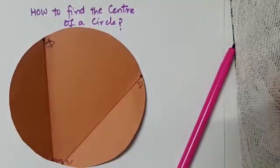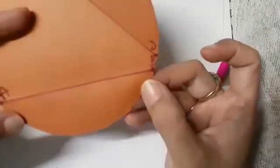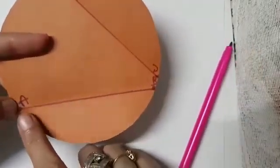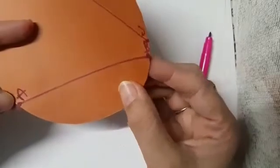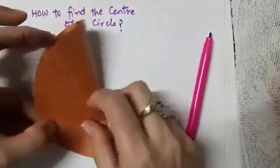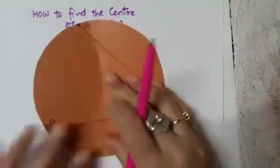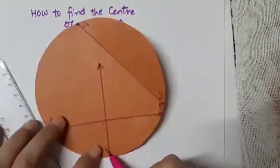I hope you watched the previous video in which we did some basic paper folding activities and learned how to find the perpendicular bisector of a line segment. The next step is to get the perpendicular bisector of both chords. First, we get the perpendicular bisector of AB by folding along AB such that point B falls on A completely, giving us a crease.